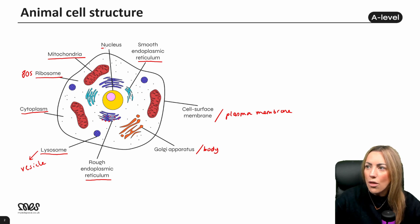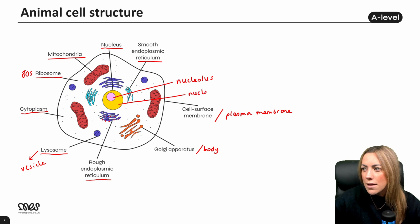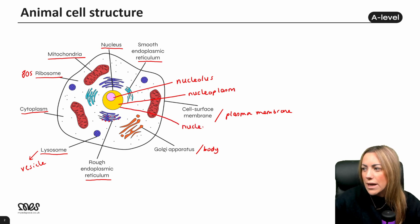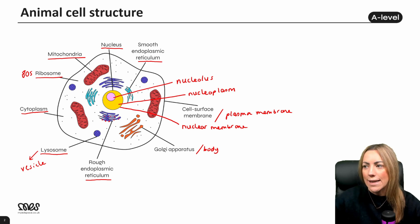And then we've got the nucleus. Within the nucleus, we have the nucleolus. We also have the nucleoplasm, which fills the nucleus. Around the outside of the nucleus, we've got the nuclear membrane, or the nuclear envelope, which is another double membrane-bound organelle.